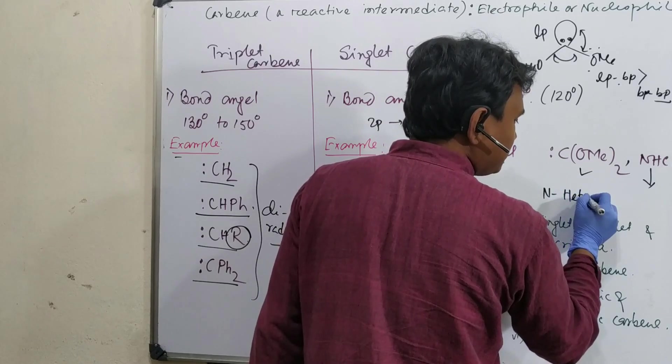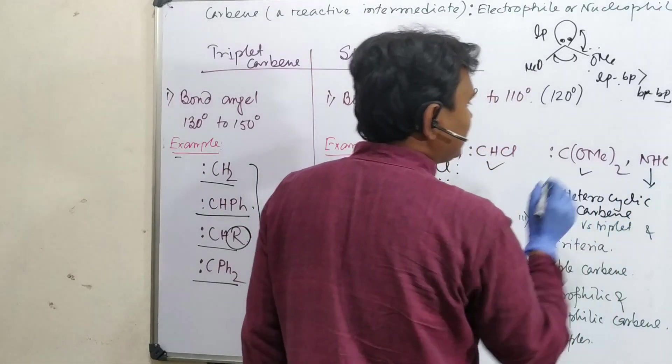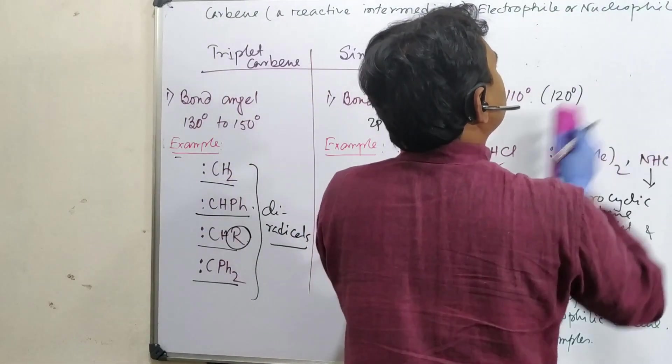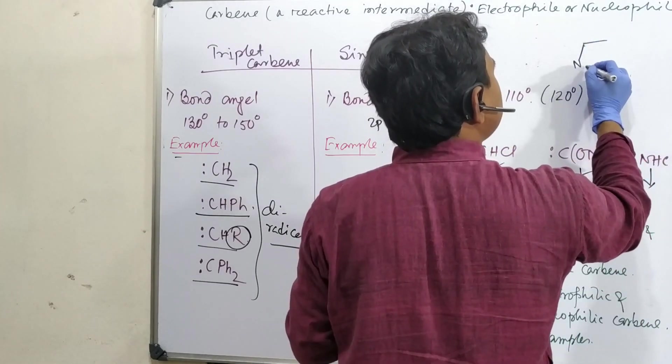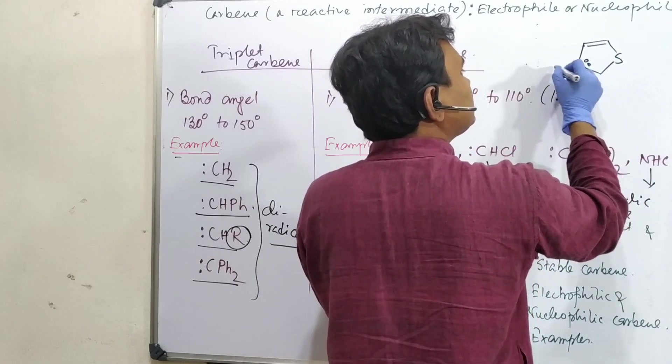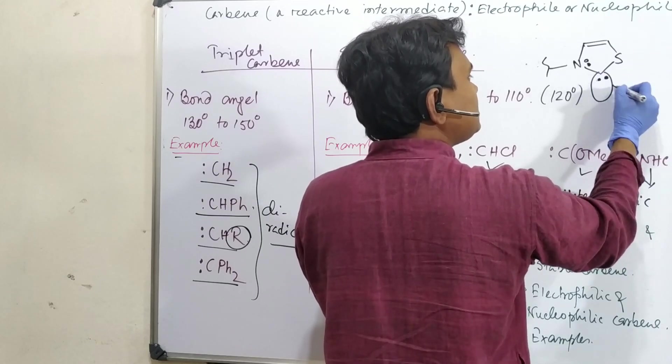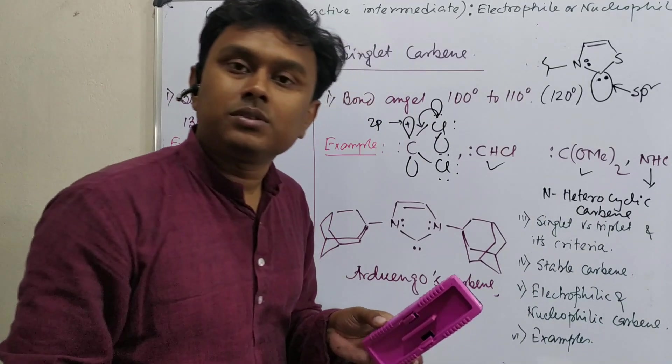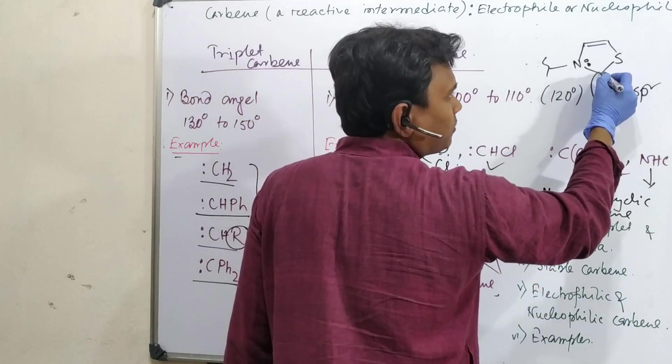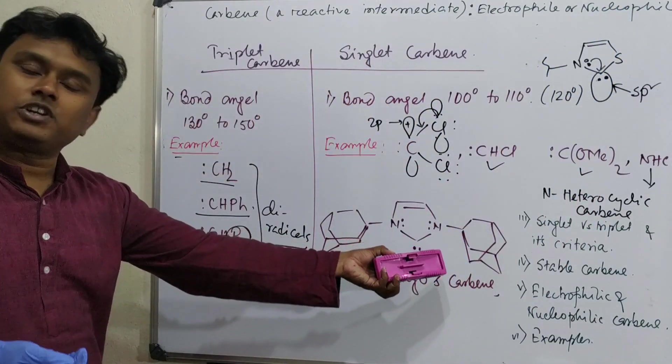Similar thing is CHCl(OMe) - here only one chlorine is there with OMe. As I told, this lone pair could be donated to the vacant p orbital. And another thing is NHC - N-heterocyclic carbene. One example is thiamine pyrophosphate compound. See, there is a vacant p orbital, so this electron is delocalized to that vacant p orbital and stabilized. This is one example of NHC carbene.